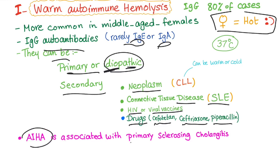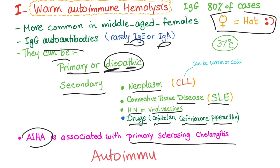Autoimmune hemolytic anemia is associated with primary sclerosing cholangitis. As a general rule in medicine, autoimmune diseases come with each other. So when you have a patient with one certain autoimmune disease, they are more likely to have another autoimmune disease at the same time.